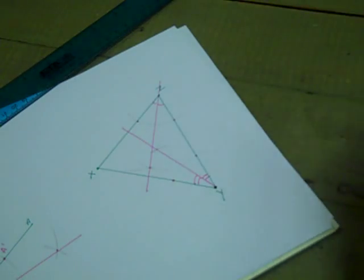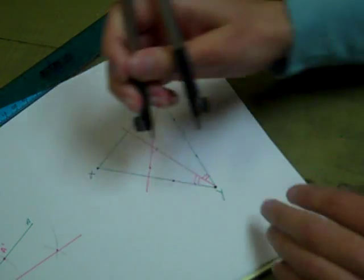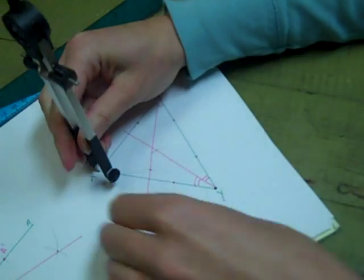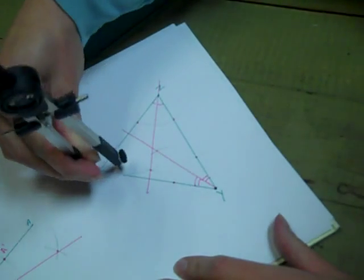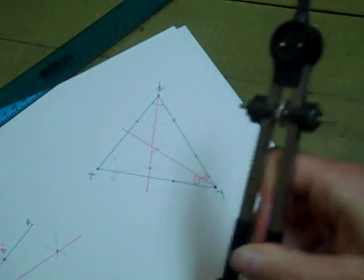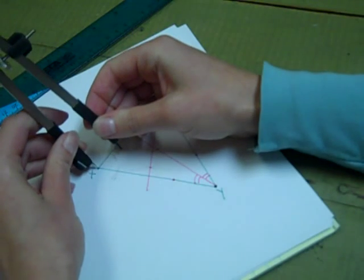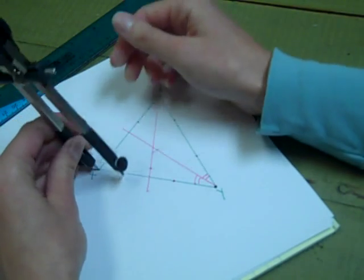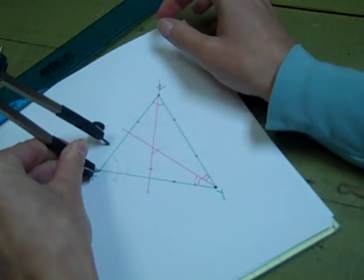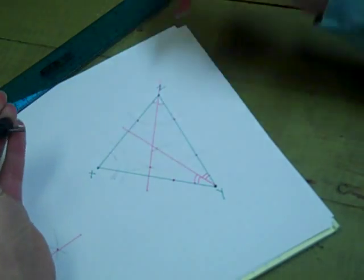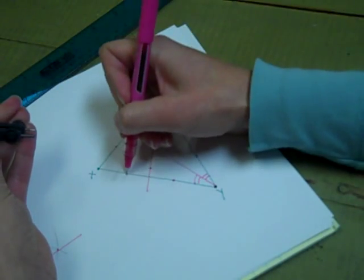So now all we have left is angle X. I will make an arc through angle X. So that didn't work out very well. I'm not going to erase, I'll just open my compass up a little bit more. I now have my two points to work from.